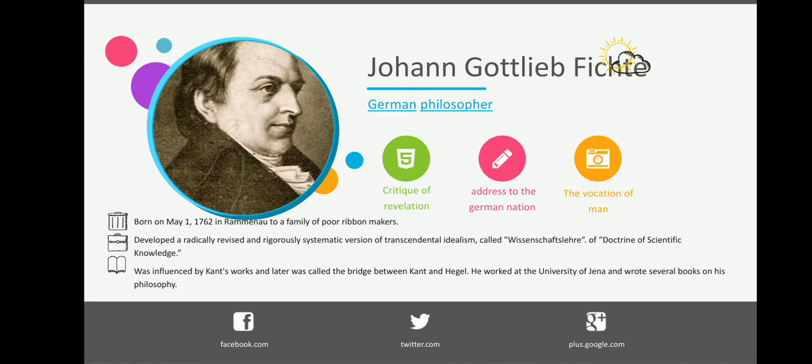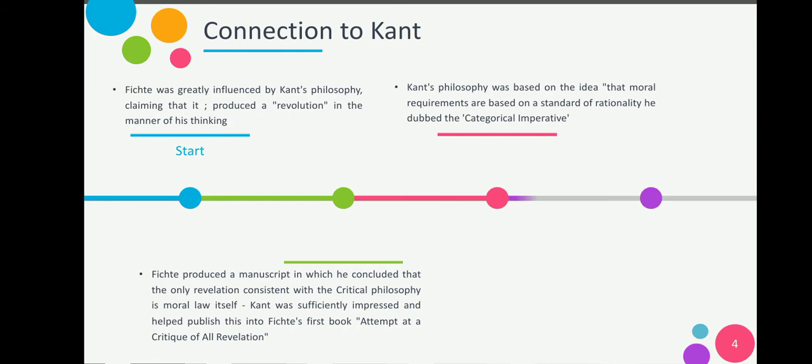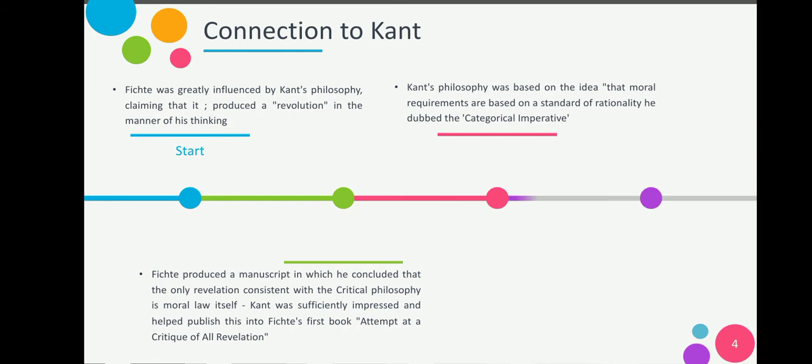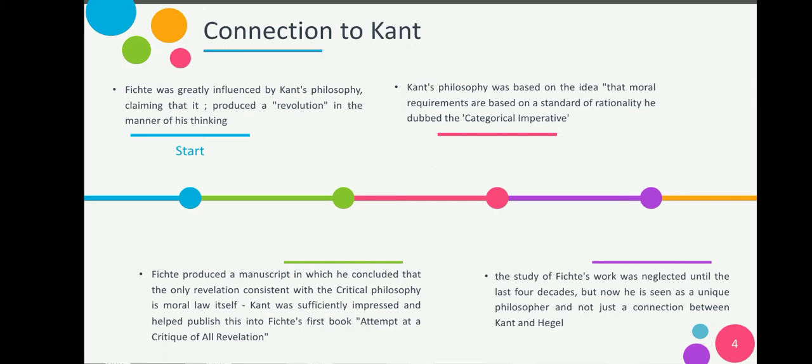Fichte's connection to Emmanuel Kant: Fichte was greatly influenced by Kant's philosophy, claiming that it produced a revolution in the manner of his thinking. Fichte produced a manuscript in which he concluded that only a revelation consistent with critical philosophy is a moral law itself. Kant's philosophy was based on the idea that moral requirements are based on a standard of rationality he dubbed the categorical imperative. The study of Fichte's work was neglected until the last four decades, but now he's seen as a unique philosopher and not just a connection between Kant and Hegel. In his time, Fichte was not yet recognized as standing on his own, but later his philosophy was recognized.